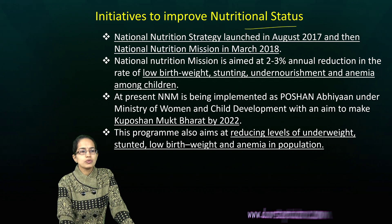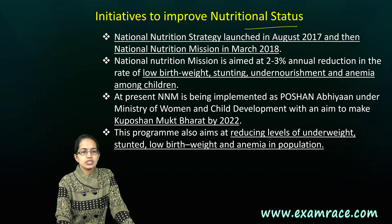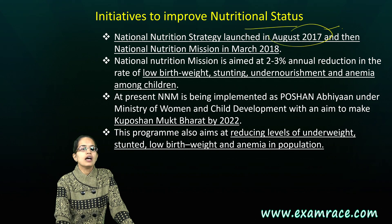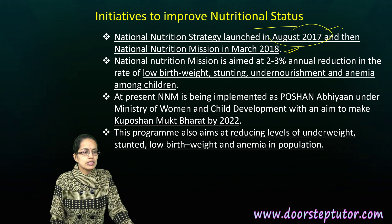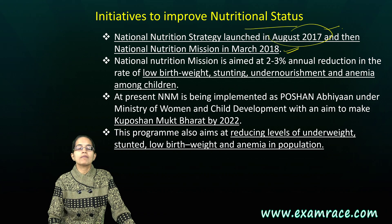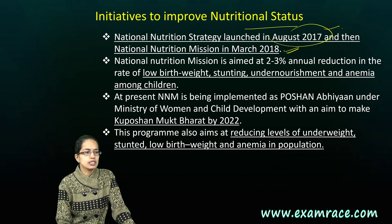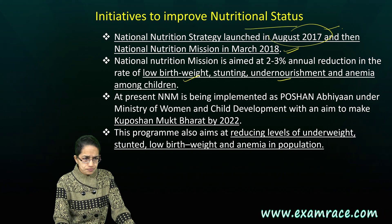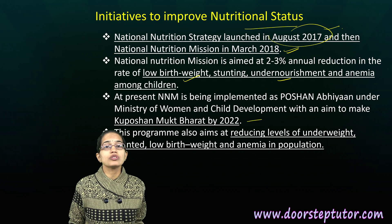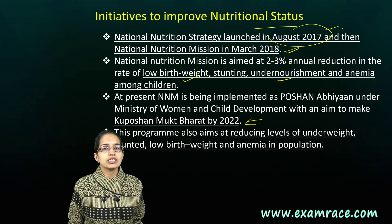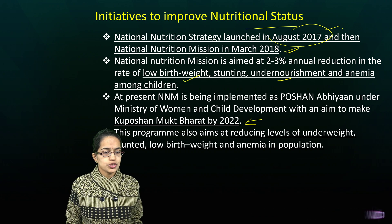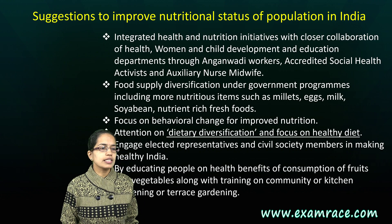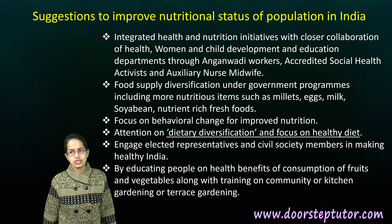The National Nutrition Strategy, launched in August 2017 and finalized in March 2018, focuses on reducing by nearly 2 to 3 percent the proportion of low birth weight, under-nourishment, and anemia cases. We are also focusing on Kuposhan Mukt Bharat, which aims to reduce malnutrition and the issues of underweight and low birth weight in children.